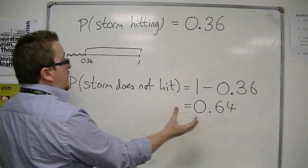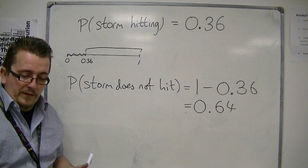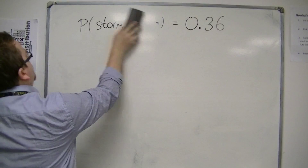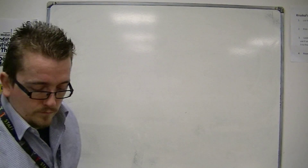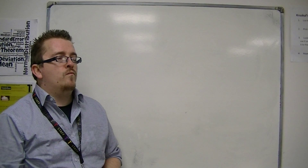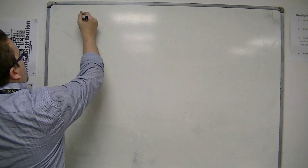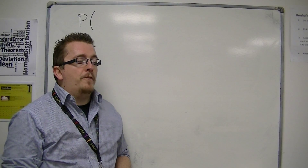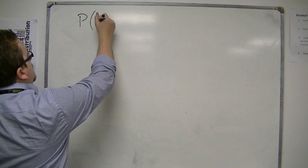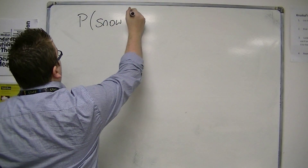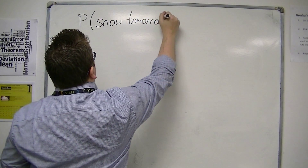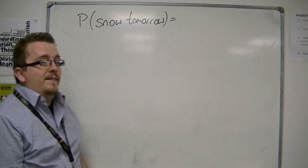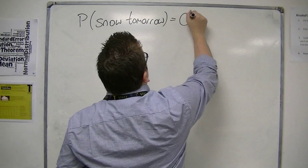So that is how we can work with these probabilities. Let's look at one more example. Let's say the probability of us having snow tomorrow — for some reason I can't get away from the weather concept — so the probability of getting snow tomorrow is 0.04.